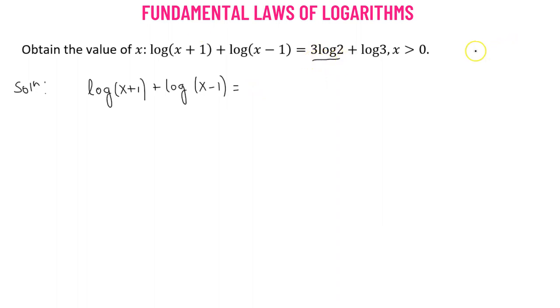Now this we can rewrite it using a property of logarithm. That means if we have a times log of b, that's equivalent to log of b raised to the power of a. Now that means we have log of 2 cubed plus log of 3.